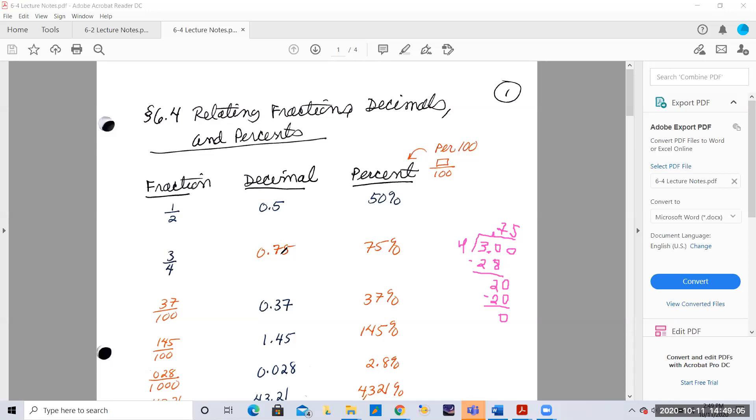Another way you could do it is say, can I convert fourths to some power of 10 so I can write it in a decimal? Because I know that's the tenths place, that's the hundredths place, the next one's the thousandths place. And I can't, four doesn't go into 10, but four does go into 100.